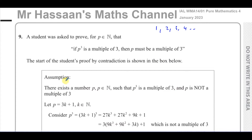The student assumes the opposite: that there exists a number P in the natural numbers such that P cubed is a multiple of 3 and P is not a multiple of 3. So when you take the number P, which is not a multiple of 3, and cube it, you end up with a multiple of 3. This negates the original statement.